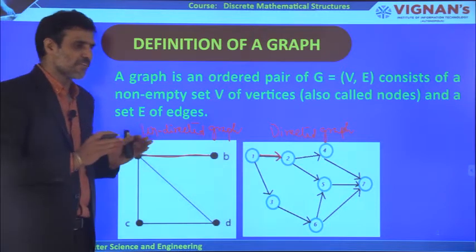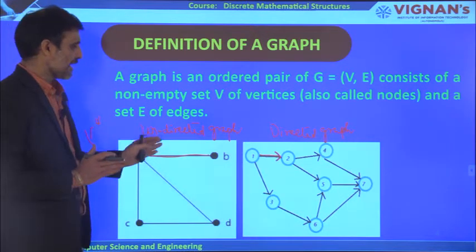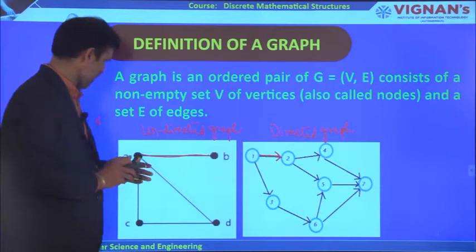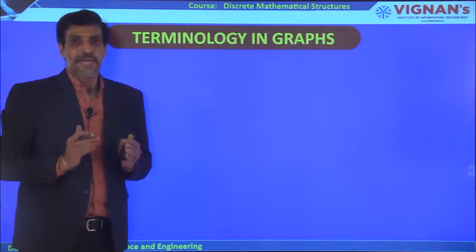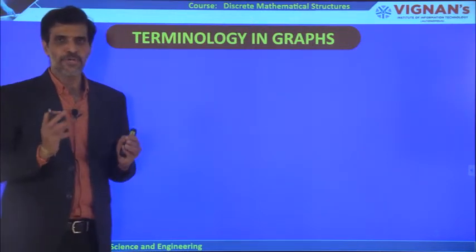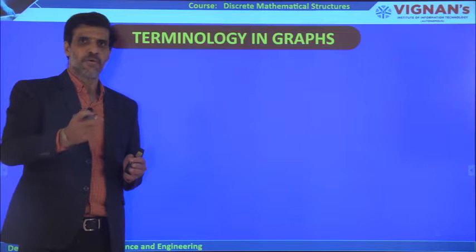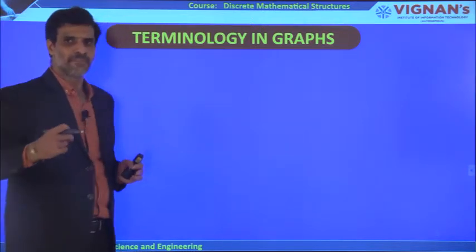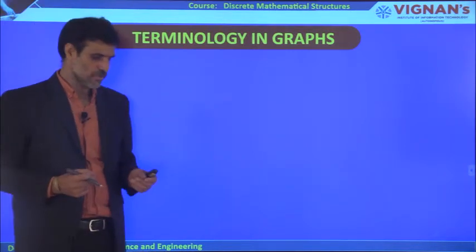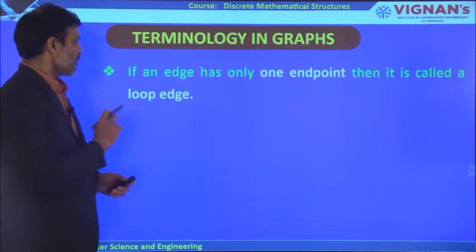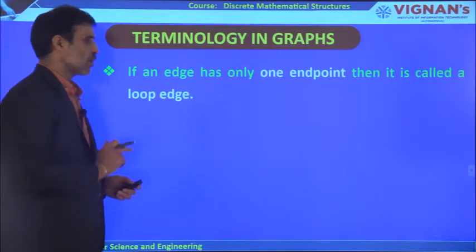We have different types of graphs. Initially, you must know about undirected graphs and directed graphs. Now let us come to the very important part of this introduction: terminology. We are going to use some terms regularly in graph theory while solving problems. The first one is: if an edge has only one endpoint, then it is called a loop edge.